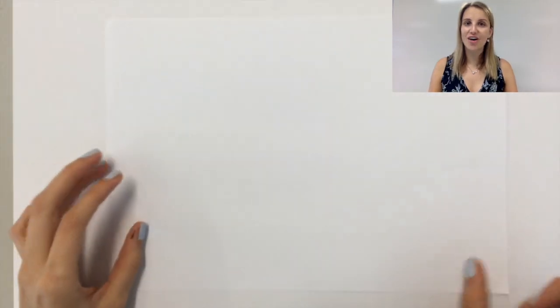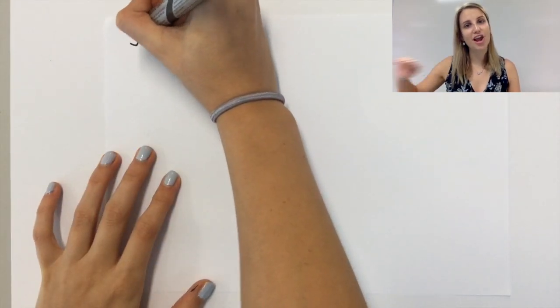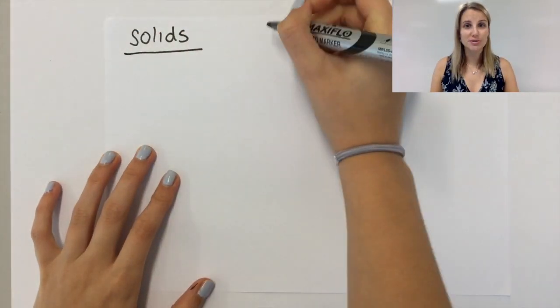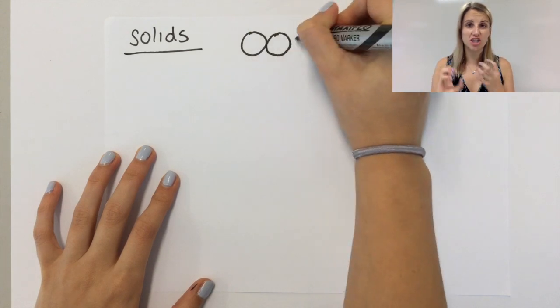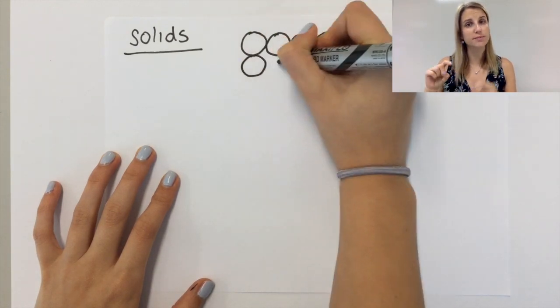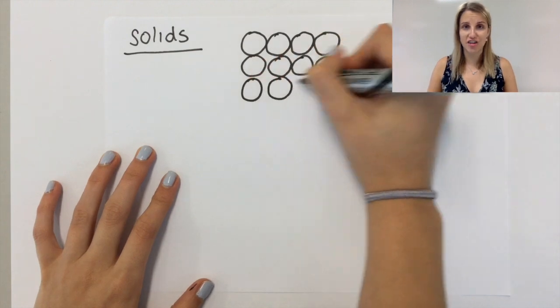Let's get started with solids. The solids are all arranged in a regular arrangement of rows. All of them are touching each other, so all of my particles, my circles, I've drawn touching each other.